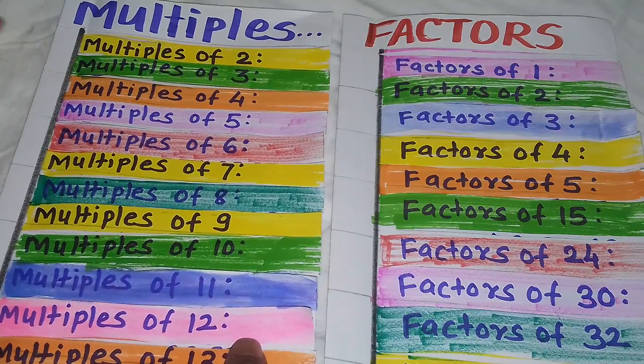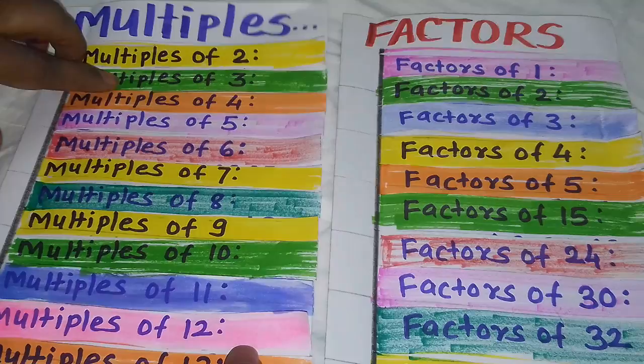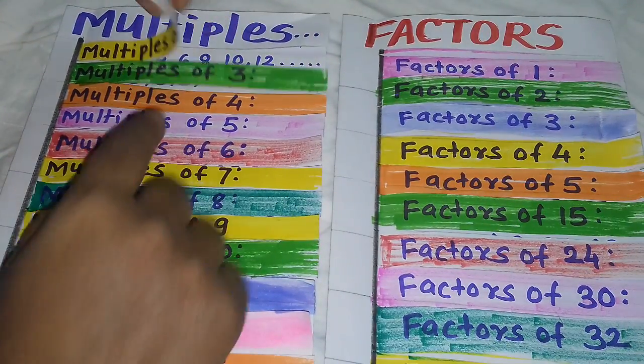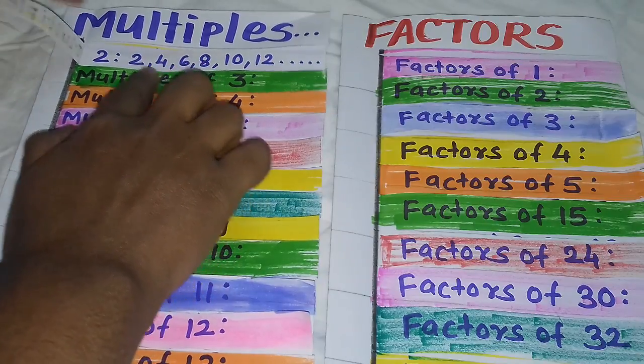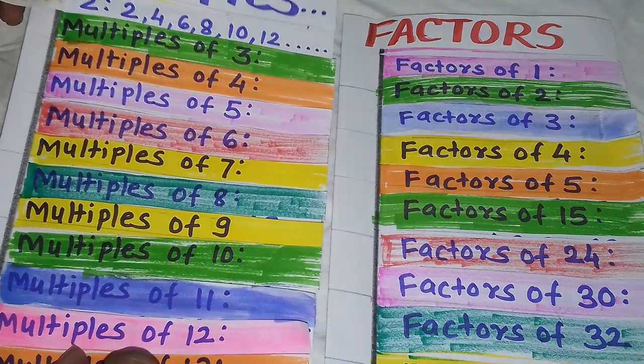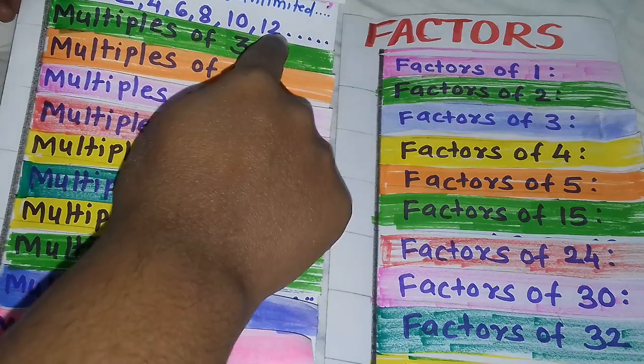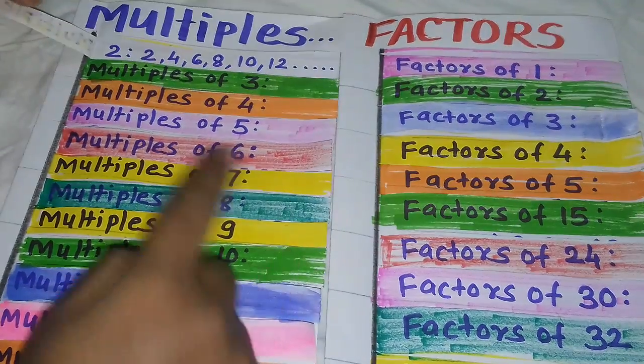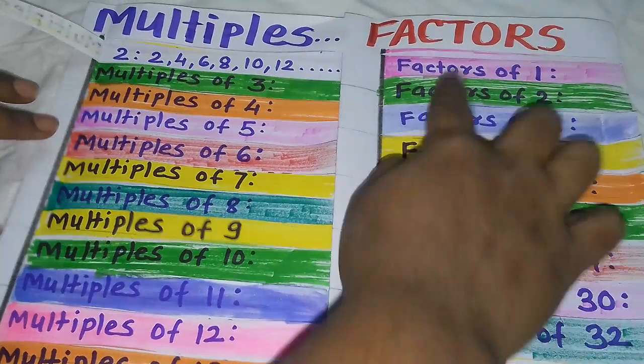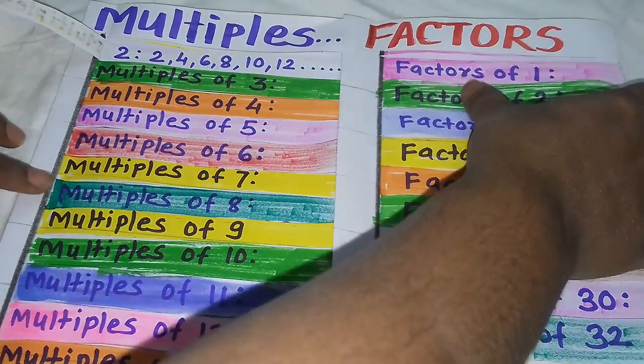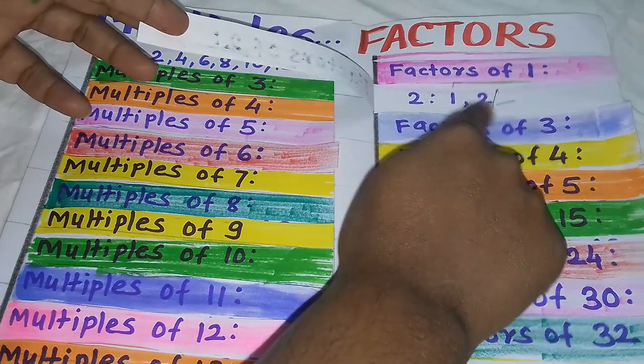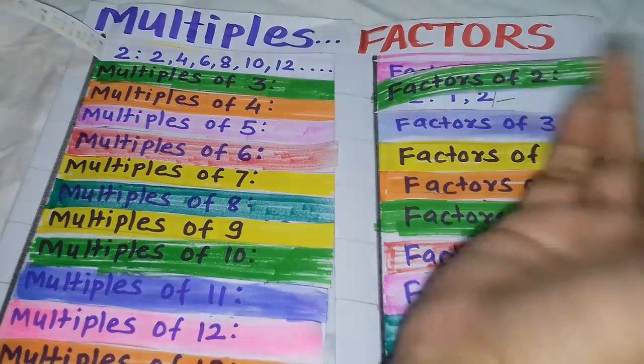Let's start with one example. You can see the multiples of 2 are 2, 4, 6, 8, 10, 12, and so on. On the contrary, the factors of 2 are 1 and 2. So what's the difference between factors and multiples?